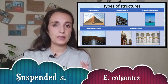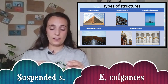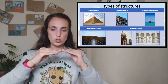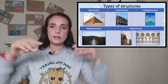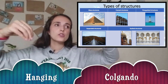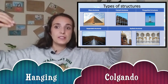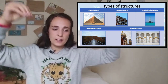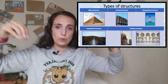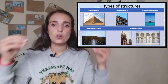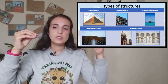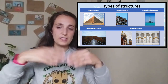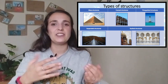Then we have suspended structures. These are structures where the base is not on the floor — they are hanging. Usually they are bridges or shelves, hanging from wires, cables, or braces. These cables or braces support the weight, because gravity is of course acting on them.